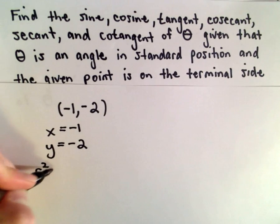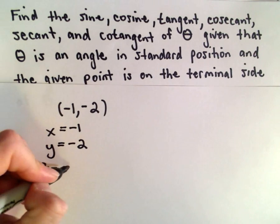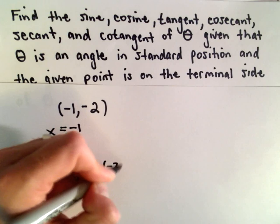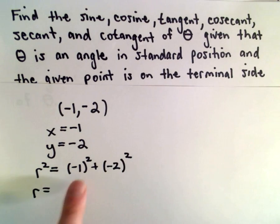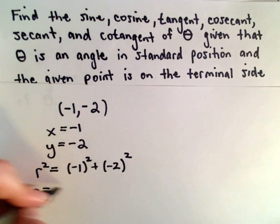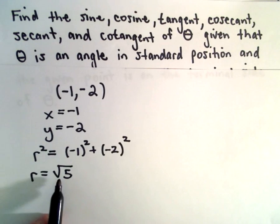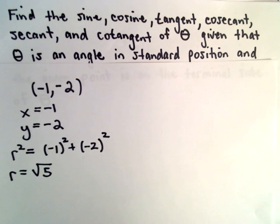To get our r value we'll use r squared equals x squared plus y squared. This will give us 1 plus 4 which will be 5. And if we take the square root of both sides keeping the positive solution, we'll get that r equals the square root of 5.